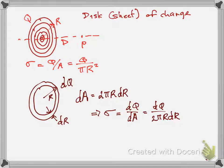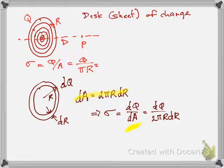We can figure out that the area of the ring is the circumference times the thickness - it's just a rectangle bent into a circle: 2πr·dr. So we can write the charge density of that ring as charge over area, which is dq over dA. Plugging in dq and dA, we get that the charge per unit area is dq over 2πr·dr, which also equals q over πR².